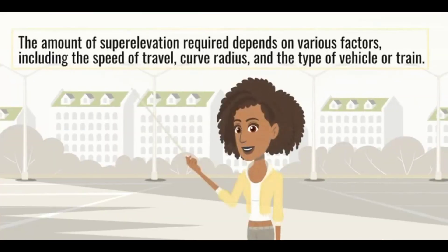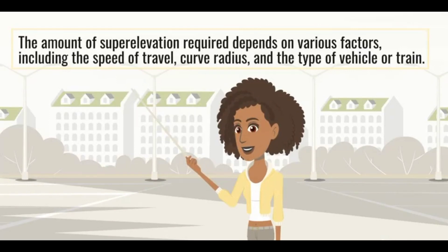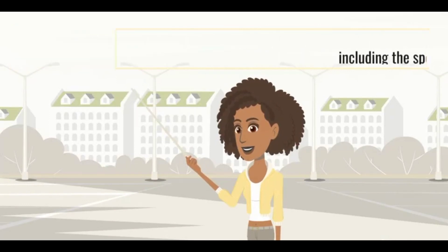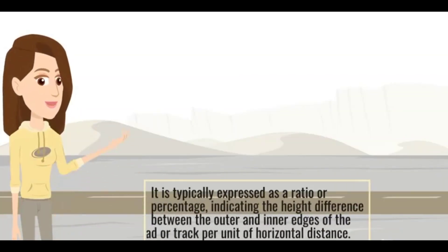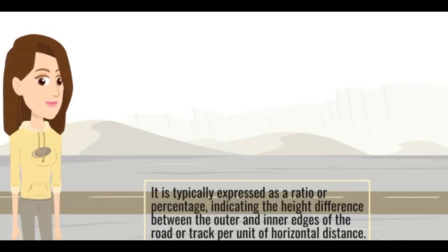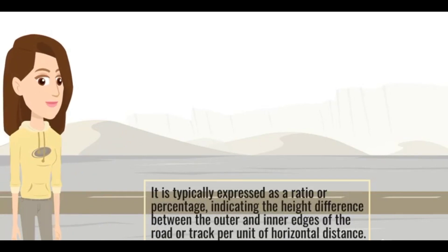The amount of super elevation required depends on various factors, including the speed of travel, curve radius, and the type of vehicle or train. It is typically expressed as a ratio or percentage, indicating the height difference between the outer and inner edges of the road or track per unit of horizontal distance.